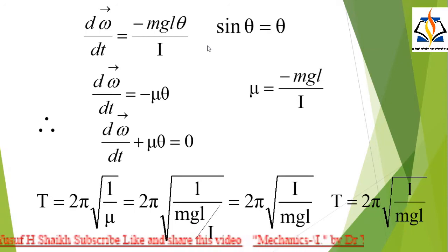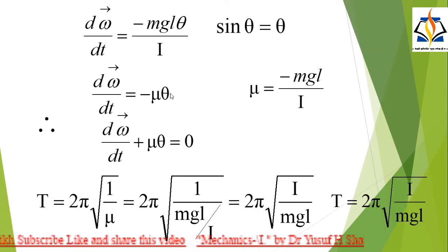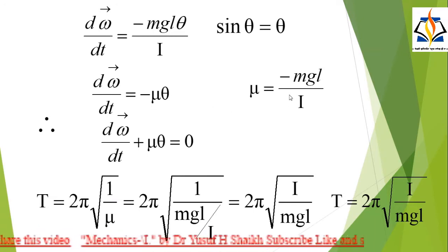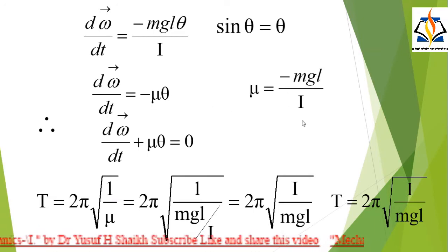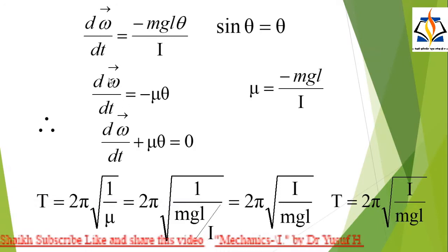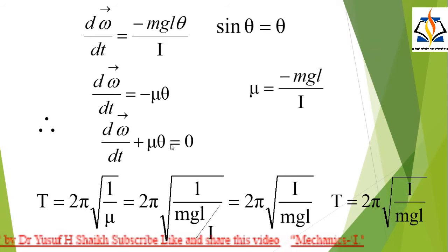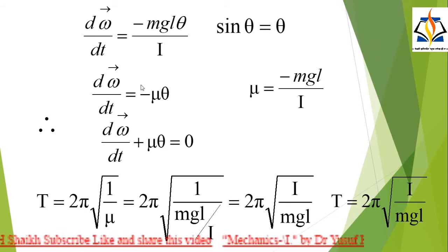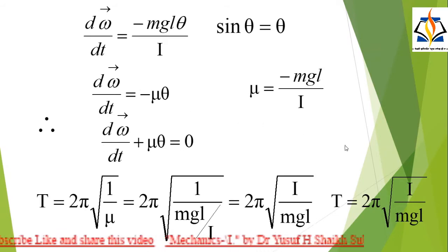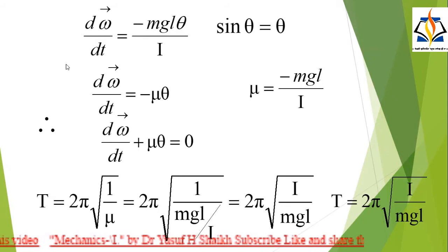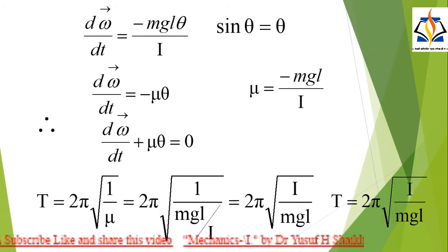Now, dω/dt = −μθ, where μ = MgL/I. Therefore, dω/dt + μθ = 0. This equation shows that angular acceleration is proportional to the angular displacement. Therefore, the compound pendulum executes simple harmonic motion.